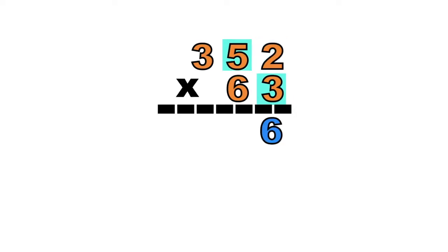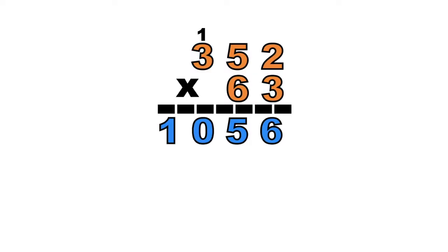3 times 5 equals — very good! It's 15. So we're going to write 5 here and carry 1. Then 3 times 3 equals — it's 9. Plus 1 equals 10. So let's proceed to the second digit of the second factor.